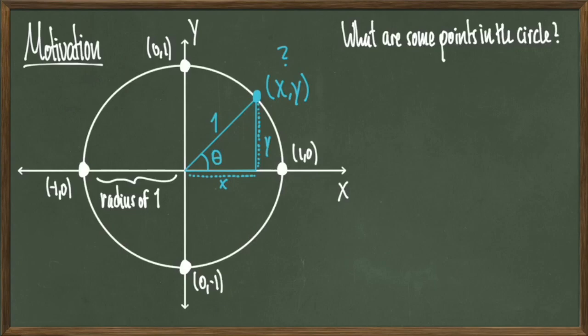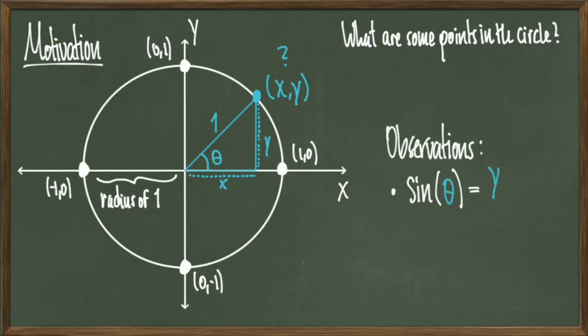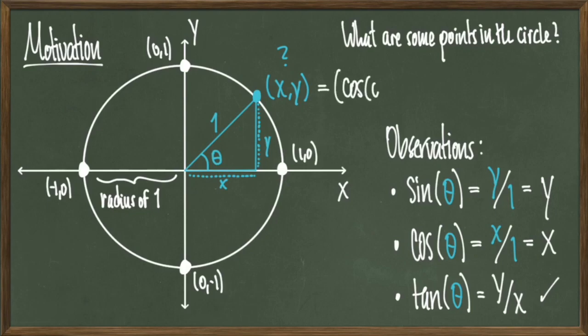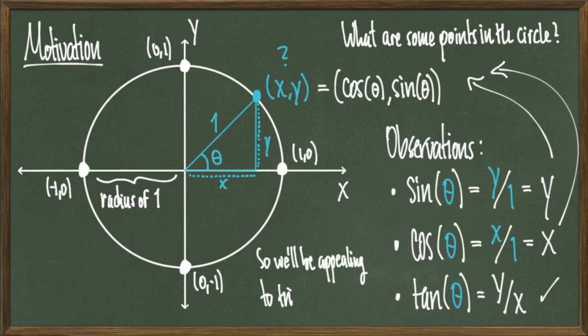Now I'm going to inscribe the angle theta sitting right next to the origin. The triangle we've inscribed allows us to use trig ratios to make some deductions. We can observe that sine of theta equals y over 1, cosine of theta equals x over 1, and tangent of theta equals y over x. So we can realize our point (x, y) as trig ratios of the inscribed angle theta. Having a hypotenuse of 1 makes the math easier because our trig ratios can be looked at as solid numbers instead of quotients.